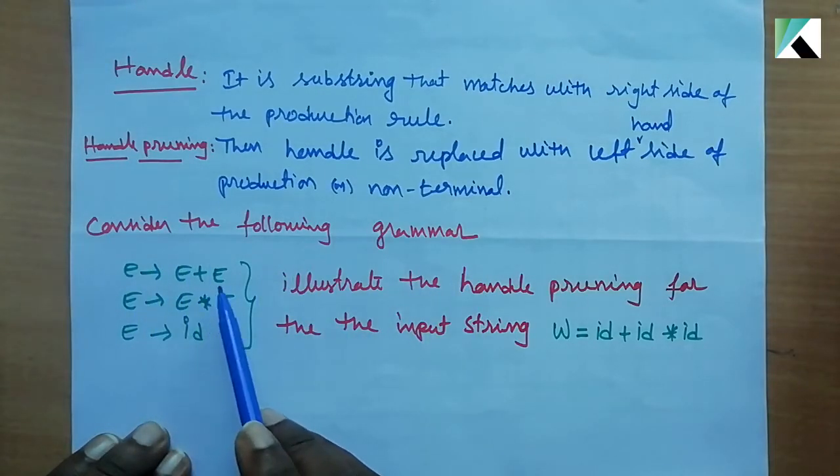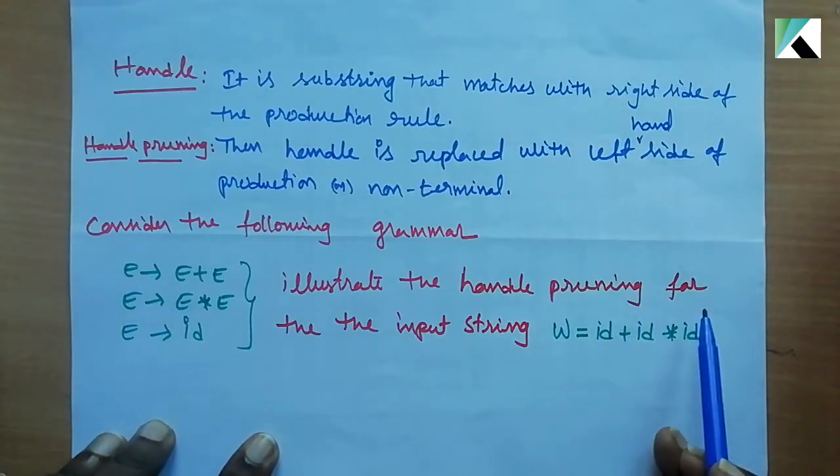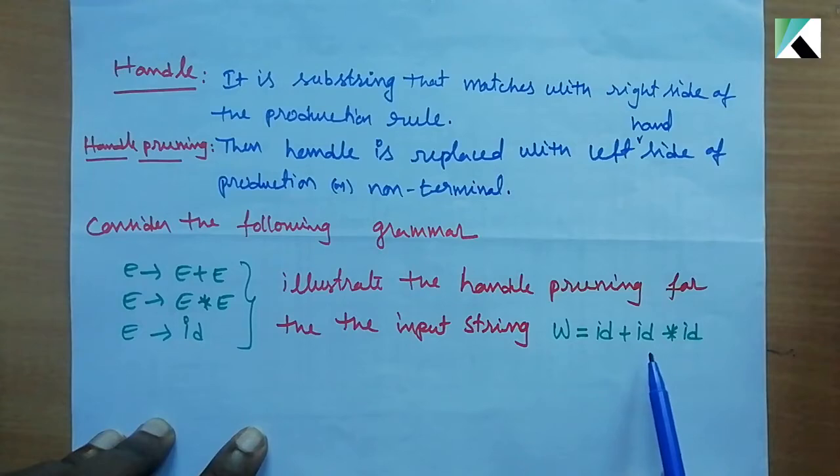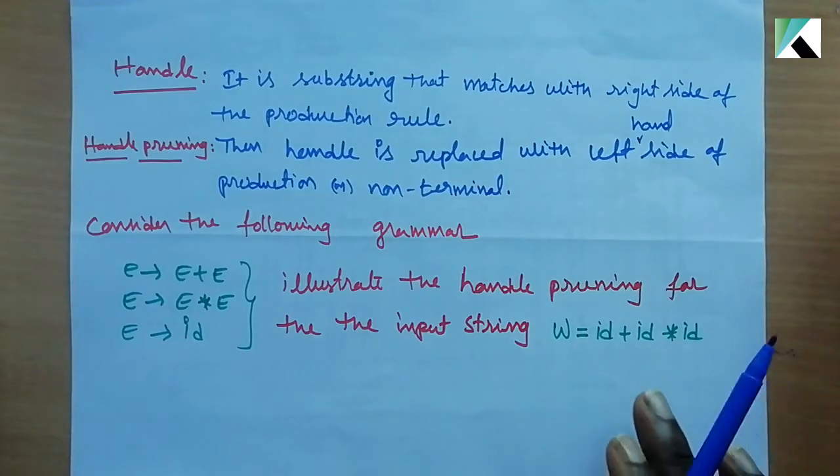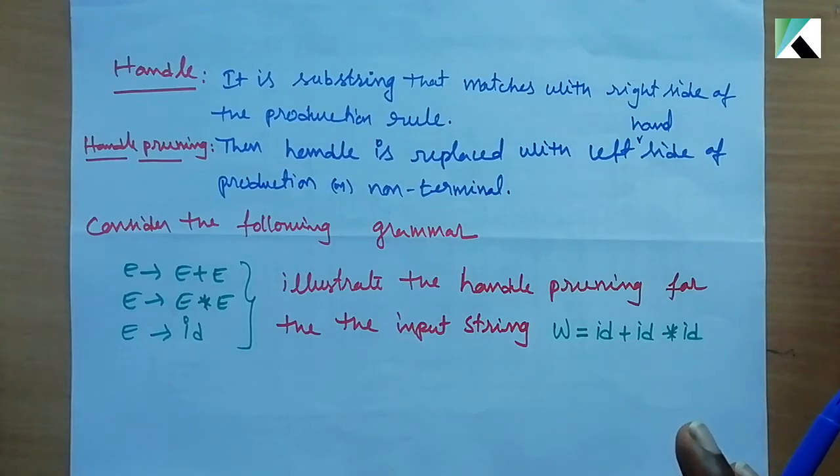Illustrate the handle pruning for input string W equals ID plus ID star ID. This is an example problem. We'll now chase handle pruning.